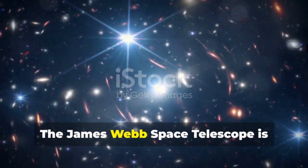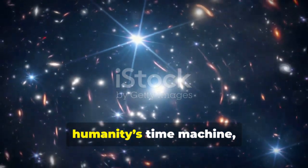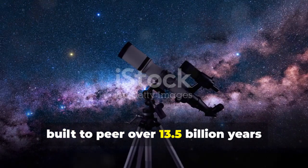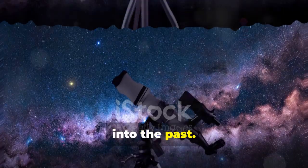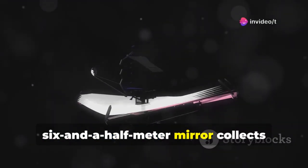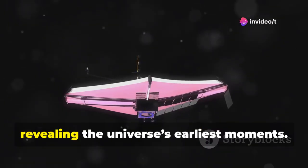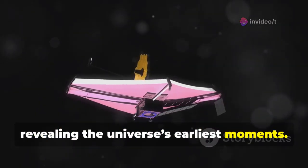The James Webb Space Telescope is humanity's time machine, built to peer over 13.5 billion years into the past. Its golden six and a half meter mirror collects ancient infrared light, revealing the universe's earliest moments.